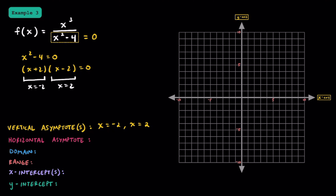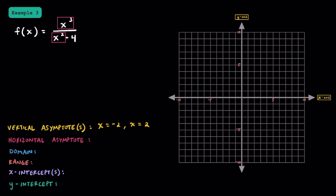For a horizontal asymptote, just look at the terms with the highest degrees. Our degree on top is 3, and that's greater than our degree on bottom, which is 2. The numerator is going to grow faster than the denominator, so our graph can grow infinitely — there's no specific y value our graph can't equal, meaning we're not going to have a horizontal asymptote. Remember, the only times we'll have a horizontal asymptote is if their degrees match or if the bottom degree is bigger. However, you have to be careful because the degree on the bottom is exactly one less than the degree on the top — we're going to have a slant asymptote for this function.